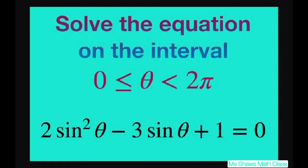Hi everyone. We're going to solve the equation 2 sin²θ - 3 sin θ + 1 = 0 on the interval 0 ≤ θ < 2π.